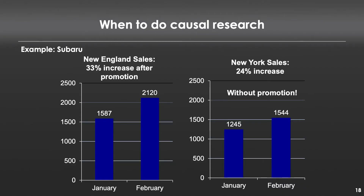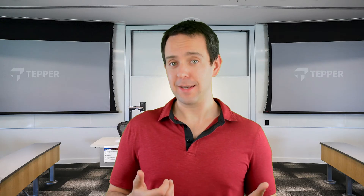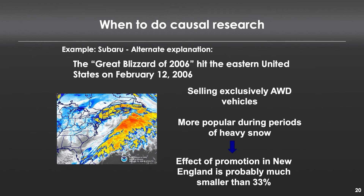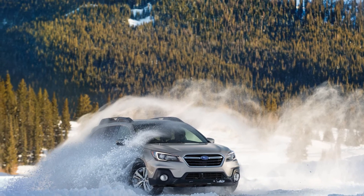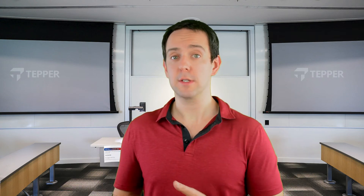We can try to answer this by looking at New York sales for the same time period to see if that increase happened there too, where a promotion was not running. And if we do that, we see the sales increase was about 24% in New York during the same time period. That still leaves about a nine percentage point difference — but is that nine percent attributed to the promotion? We just don't know. Anything else could have been going on. In fact, exactly during this time period, there was a major snowstorm in the Northeast, and Subaru is associated with being superior in adverse weather. Sales going up in response to a snowstorm is no surprise. It could just as likely have been the snowstorm as the promotion, and because of that, we can't answer this question.